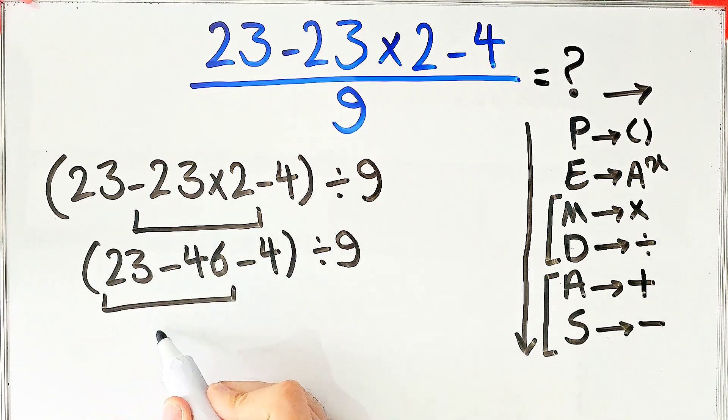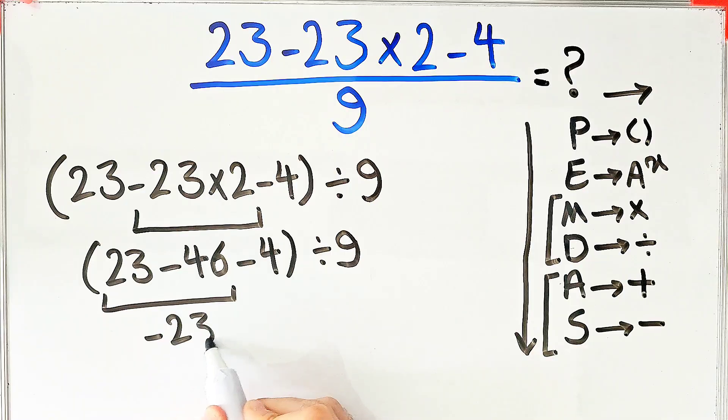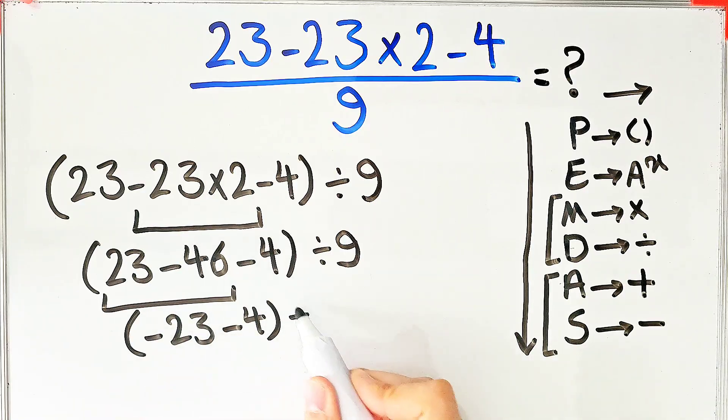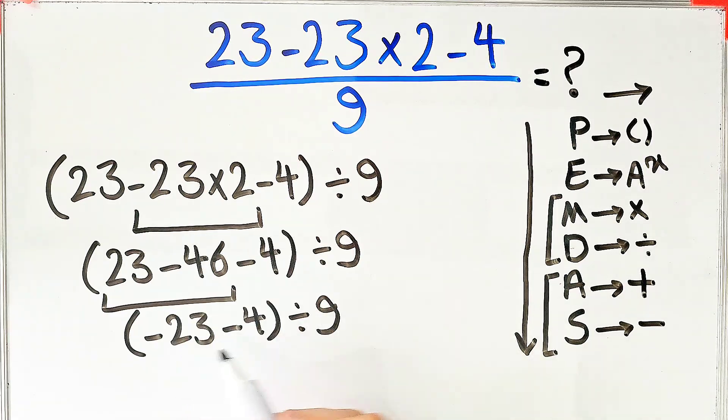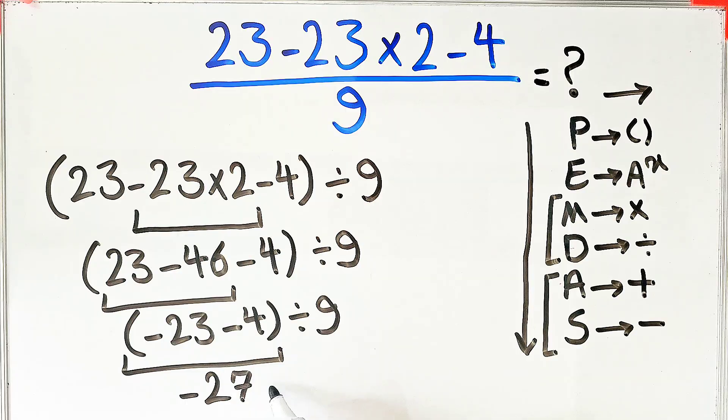Now we have negative 23 minus 4 inside the parentheses, then divided by 9. Negative 23 minus 4 equals negative 27, and negative 27 divided by 9 equals negative 3.